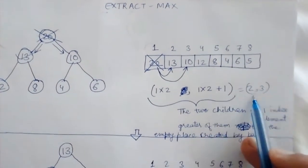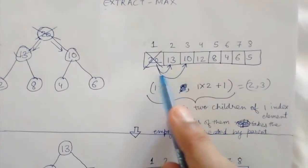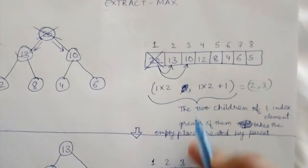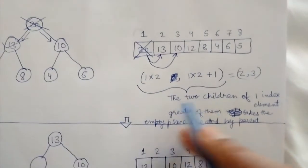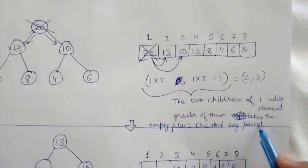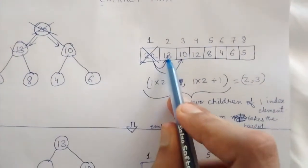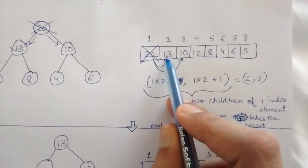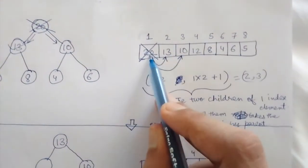These two will be 20's children. The greater of them takes the empty place created by parent. Among 13 and 10, 13 is greater, so 13 will take the place of 20.